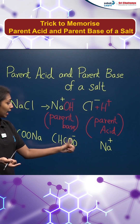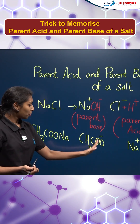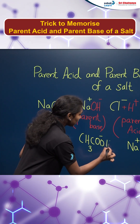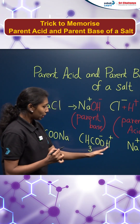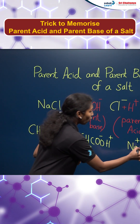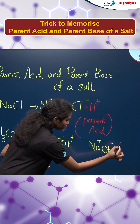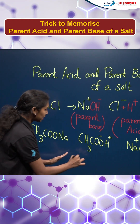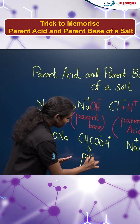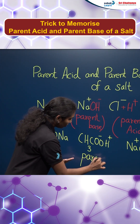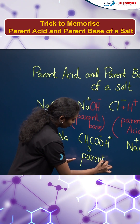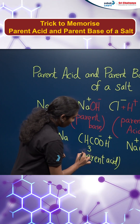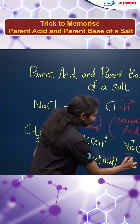We need to add H+ and OH- respectively. So I am adding H+ to CH3COO- and OH- to Na+. We will get the parent acid as CH3COOH and the parent base as NaOH.